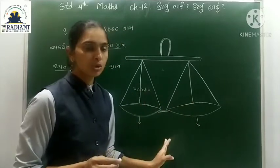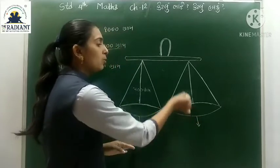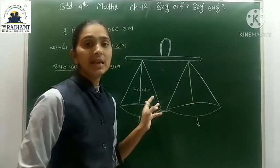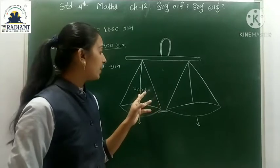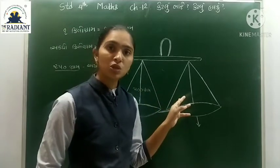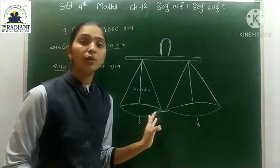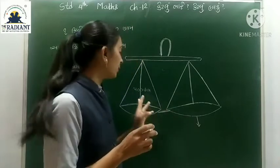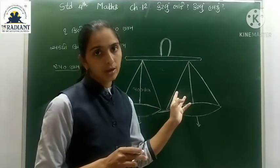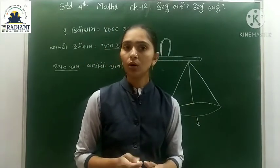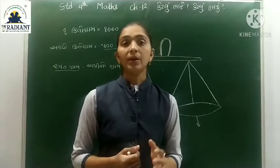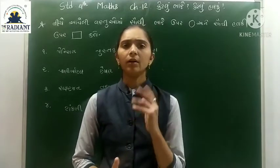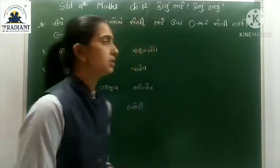ત્રાજવામાં બંને પલ્લા સમતોલ હશે તો સરખું. પરંતુ જો આ પલ્લું ઉપર ગયું, ત્યારે સમજી લો કે માસી આપણને છેતરી રહ્યા છે - આપણને 500 ગ્રામ કરતા ઓછું આપી રહ્યા છે. આપણને ઓછું ન મળવું જોઈએ, સરખું જ મળવું જોઈએ.